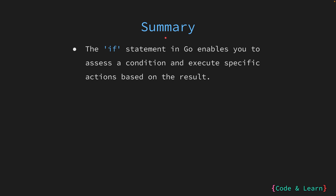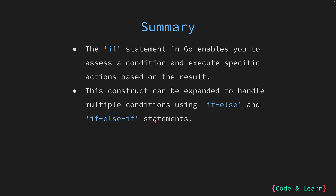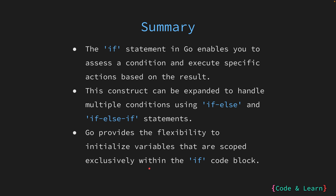Now let's summarize what we have learned in this lesson. The if statement in Go allows you to evaluate a condition; based on the result — either true or false — specific actions are executed. In situations where there are more than two possible outcomes, Go provides constructs like if else and if else if, which allow you to specify distinct code blocks to be executed based on different conditions. Go also offers the flexibility to create and initialize variables directly within the if statement's code block. These variables are scoped exclusively within the if block, which aids in writing more concise and organized code. All these points highlight the versatility of the if statement in Go for making decisions, including scenarios with multiple possible options, and the ability to initialize variables within the if block provides a convenient way to manage variables in a localized manner.